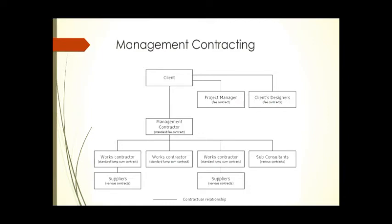Now, if you notice something — this is one of the practical aspects to look at: the pricing options. It is a standard fee contract. The cost of this project will not be known until you finish all the procurement of these packages. If a package costs 100 million, for example, this guy will put his margin on that and the client will pay the margin plus the actual cost. These people will not say the cost will be 300 million — they will say whatever cost happens, it is cost-plus. Whatever cost is there, they will have a fee.